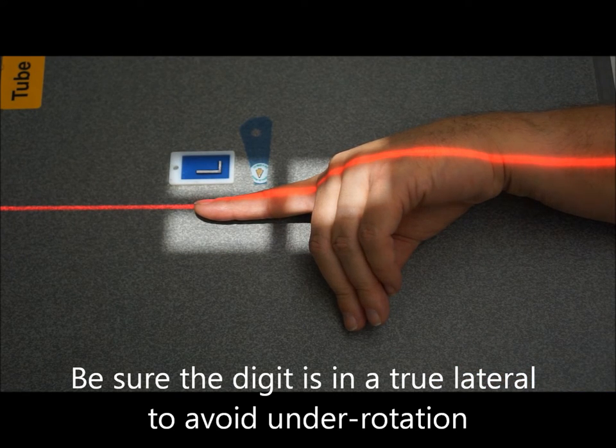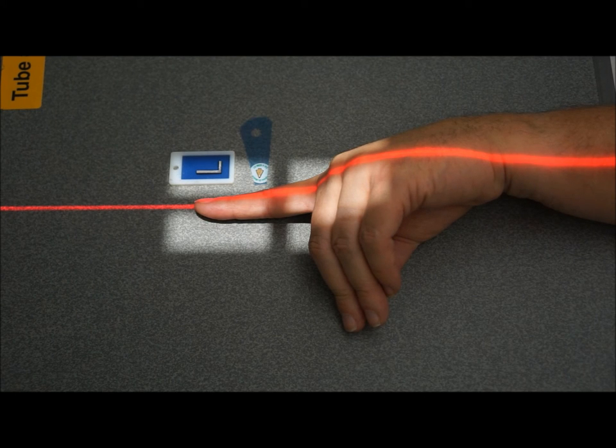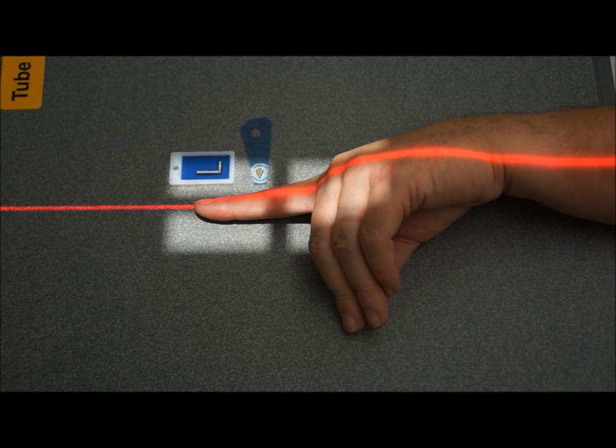Again making sure we get distally all the way down to the metacarpophalangeal joint. And that is the lateral second digit and this was a three view second digit demonstration.